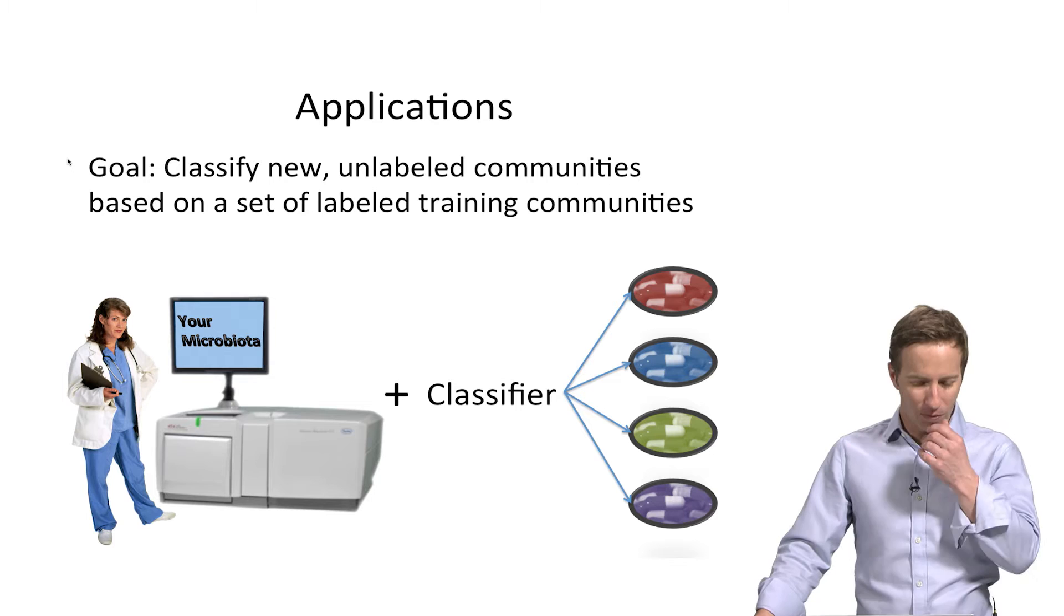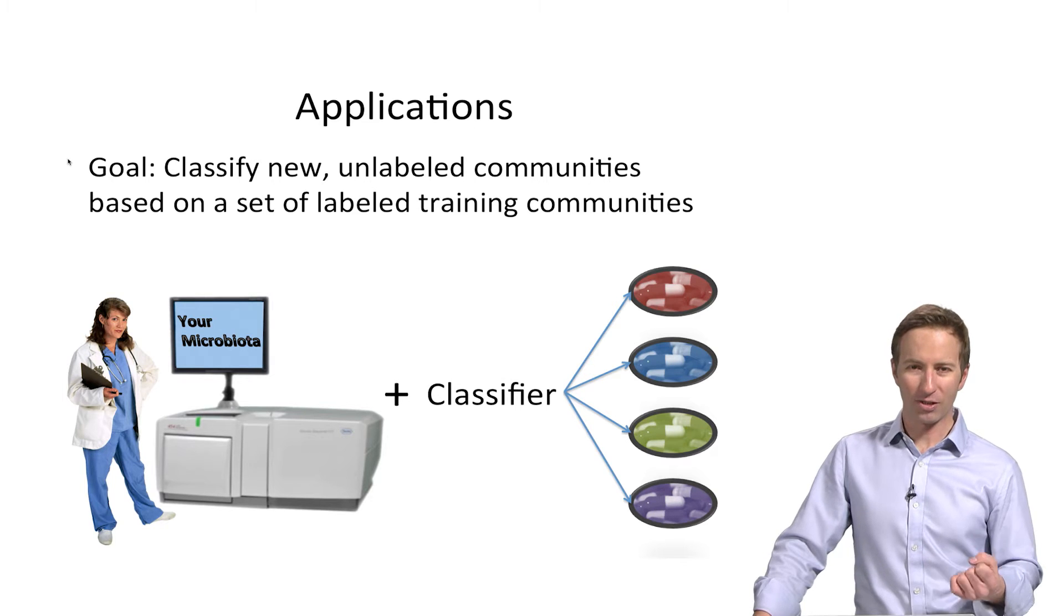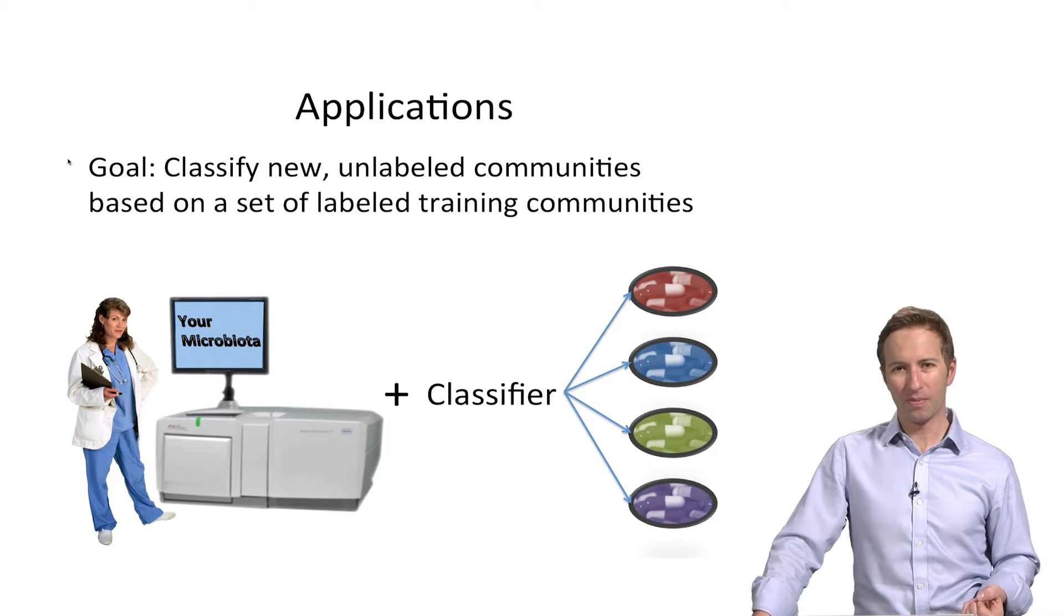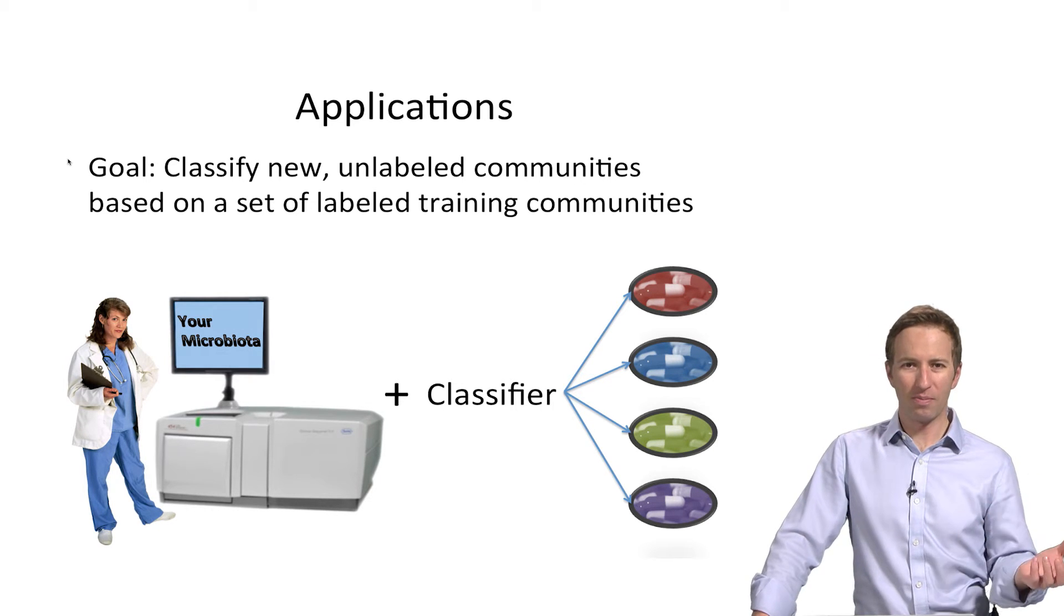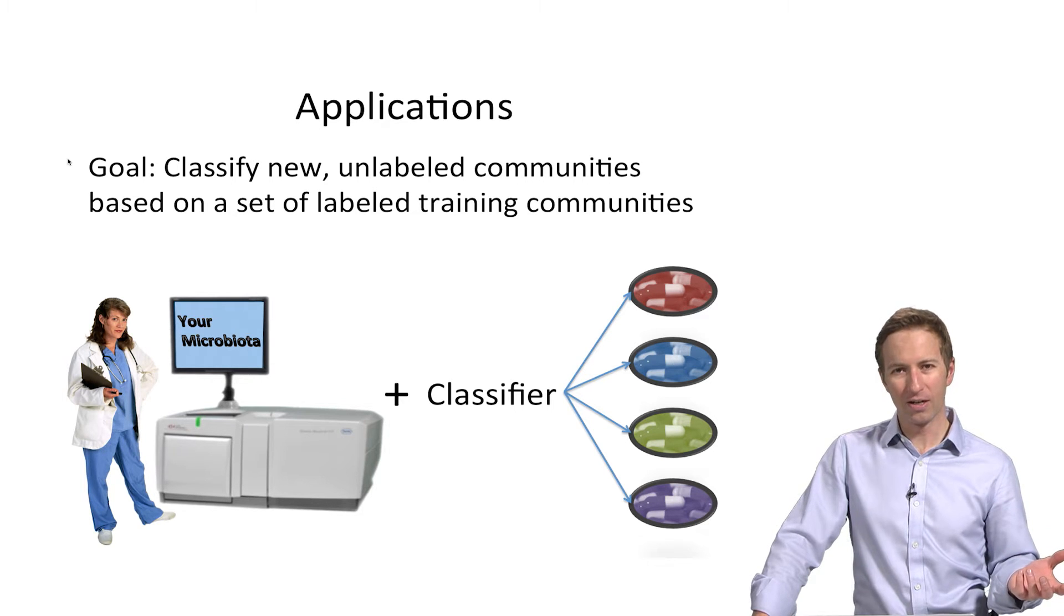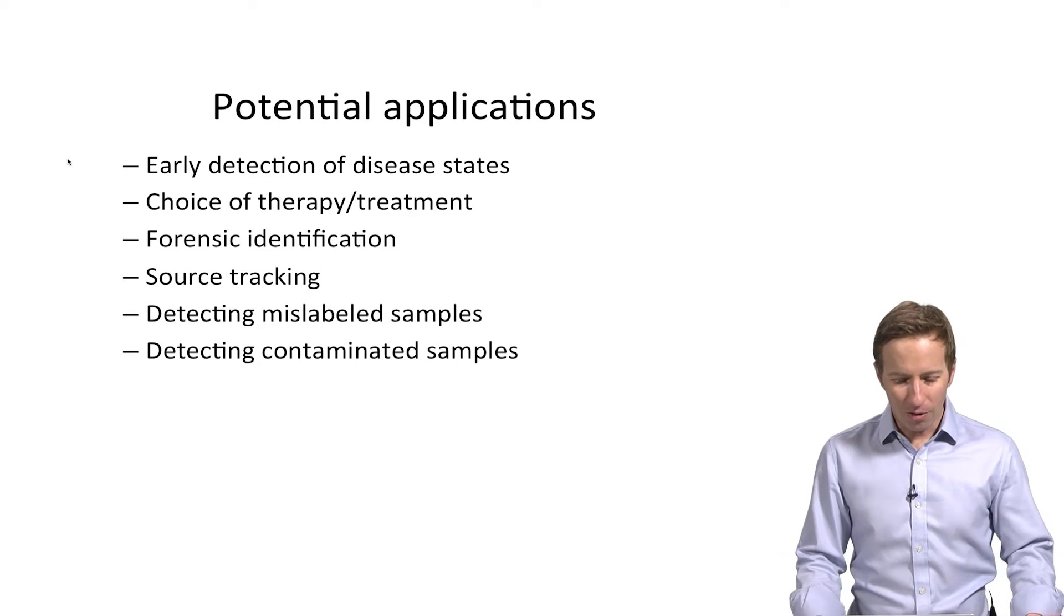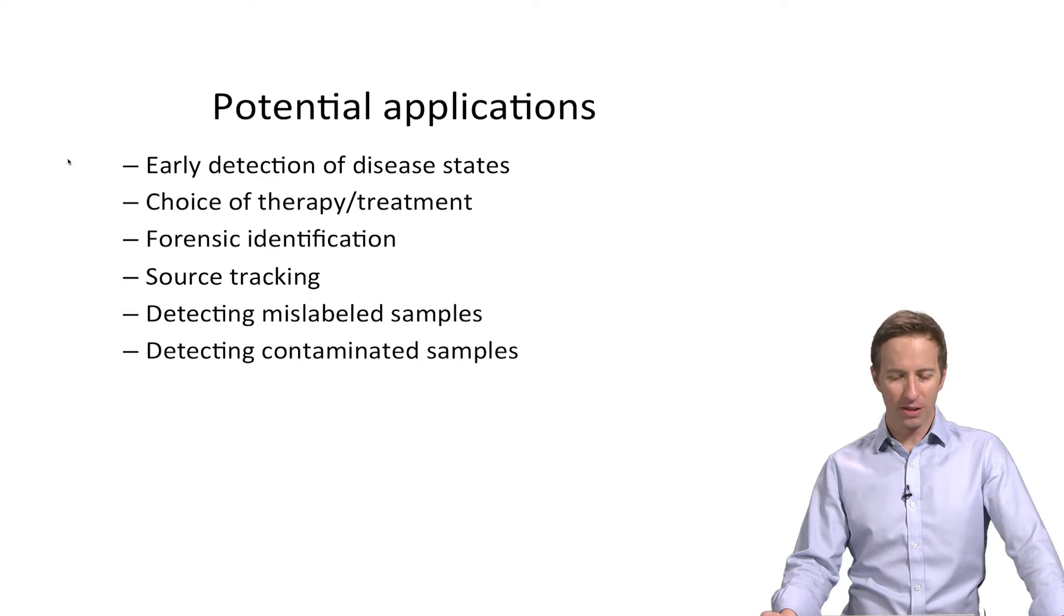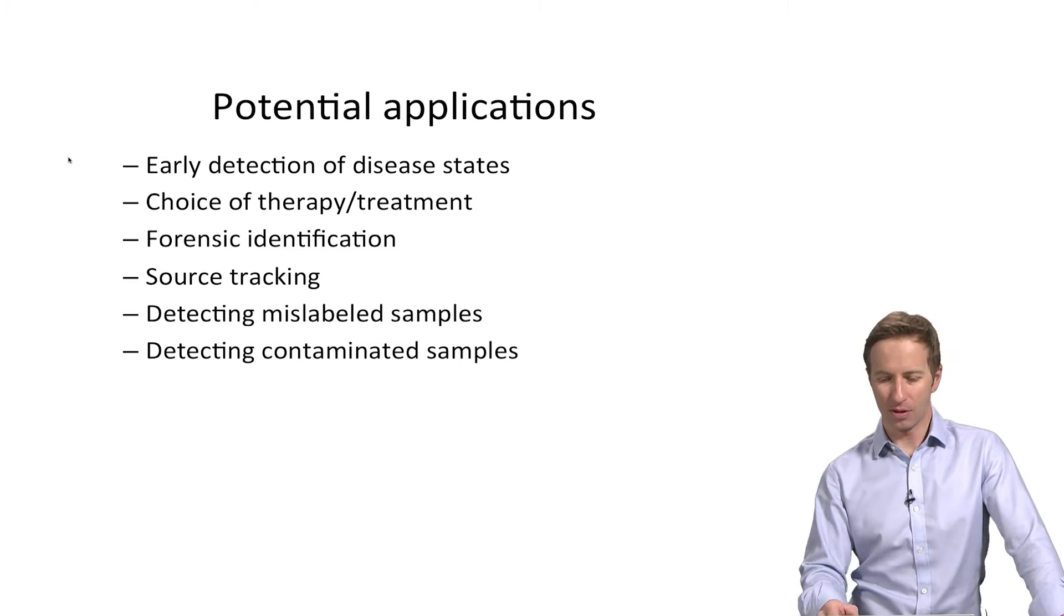And the application of machine learning here is going to be in building classifiers. So an obvious application would be a patient comes in and gets their microbiota sequenced and then we use some machine learning based classifier to predict which care path they should go on. Now there are other potential applications so we can do this for early detection of disease. There has been some application in forensic identification. We can do source tracking which we'll talk about later. We can also try to detect mislabeled or contaminated samples using supervised learning.